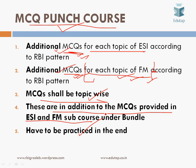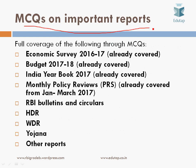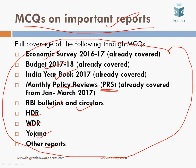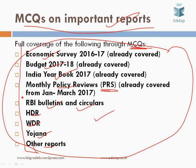The sixth and last course covers MCQs on important reports. RBI recommends that aspirants read several important reports, including the Economic Survey, the latest Budget, India Yearbook, monthly policy reviews by PRS India, important RBI bulletins and circulars, the Human Development Report, the World Development Report, and Yojana, among others. All these relevant and important reports for RBI Grade B 2017 are being covered through MCQs, leaving no stone unturned.